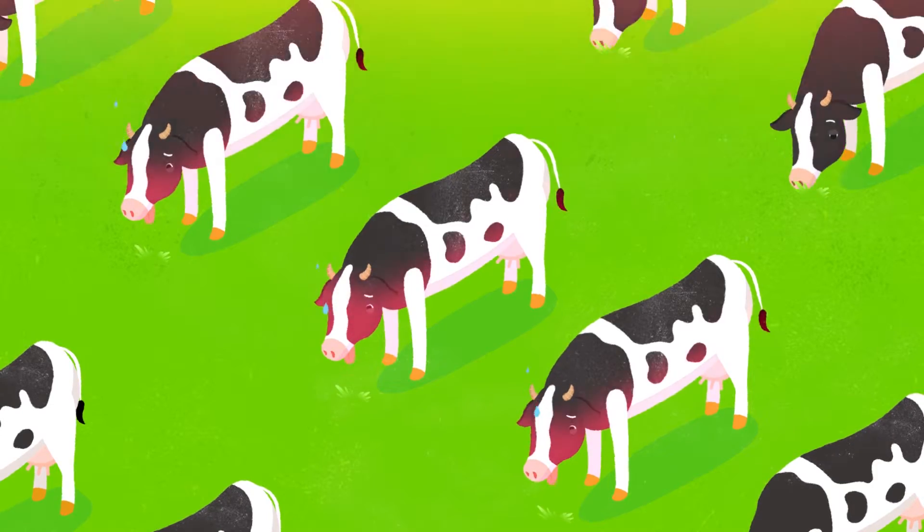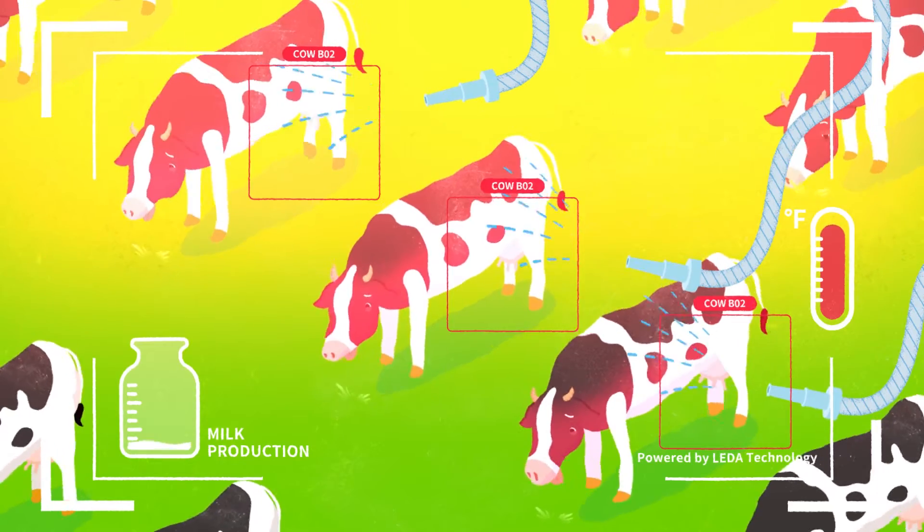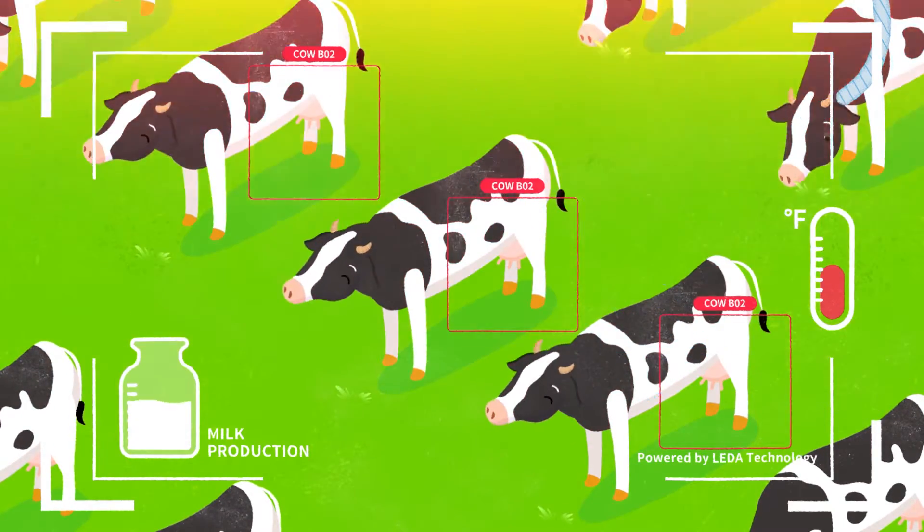When it gets too hot, AI machine vision can pinpoint the position of each cow's udders and then turn on the sprinkler to cool them down.